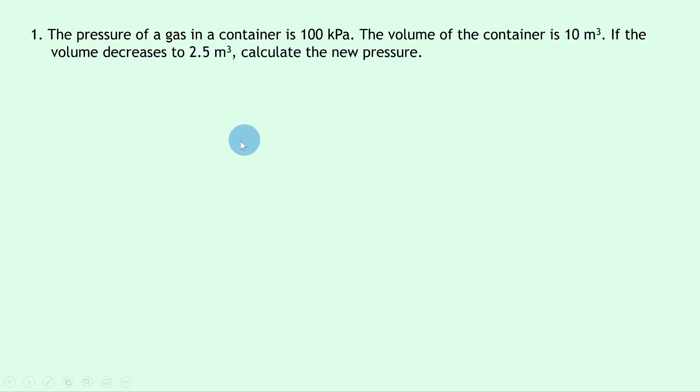So writing down what we know from the question, we're trying to find the new pressure, which is the same as the final pressure, P2. We note the initial pressure P1 is 100 kilopascals, the initial volume V1 is 10 meters cubed, and the final volume V2 is 2.5 meters cubed. Notice that it's okay to leave pressure in this case in kilopascals, as long as we make our final answer in kilopascals as well.